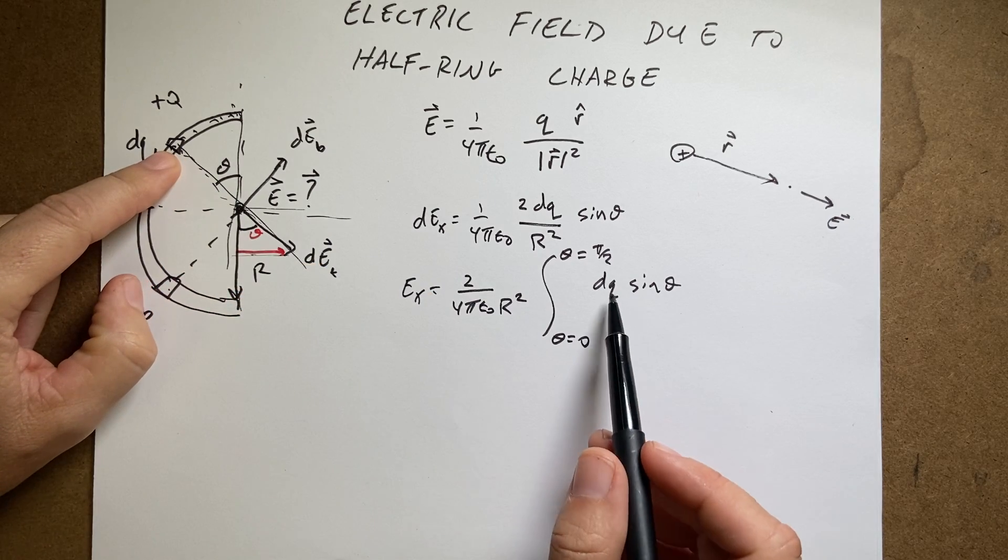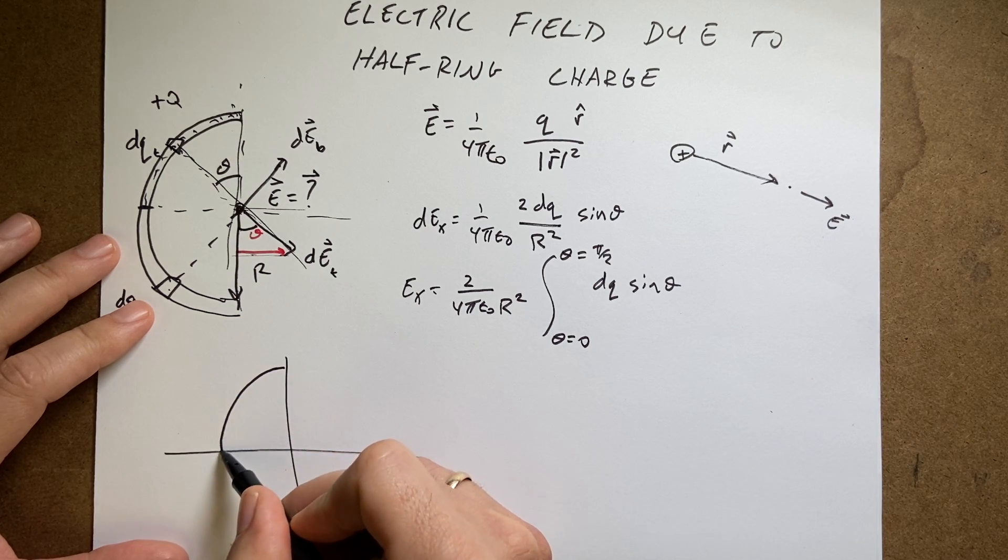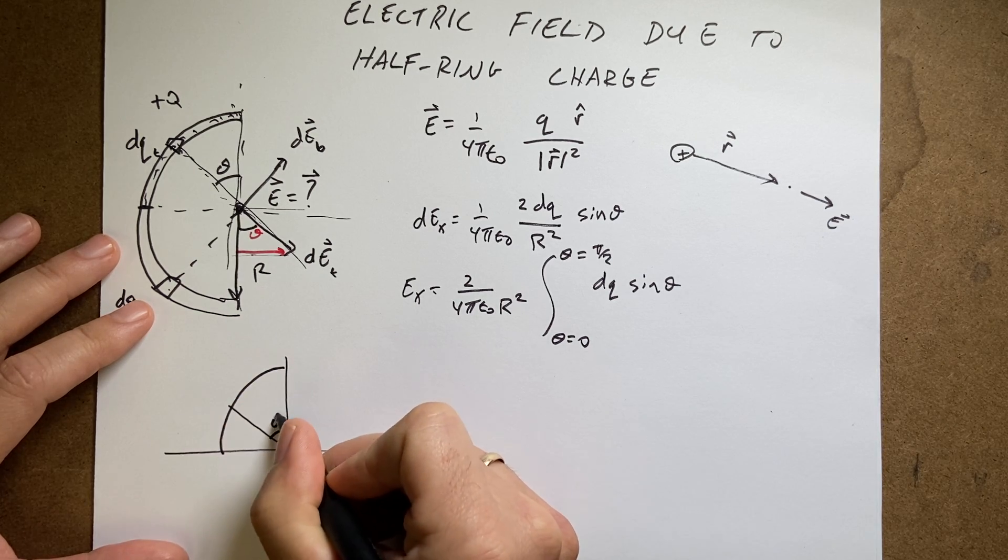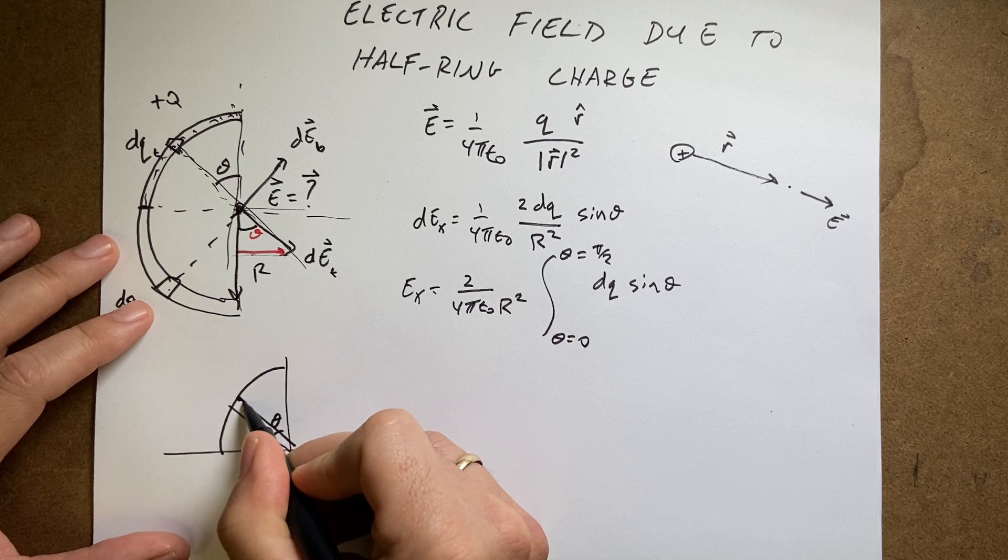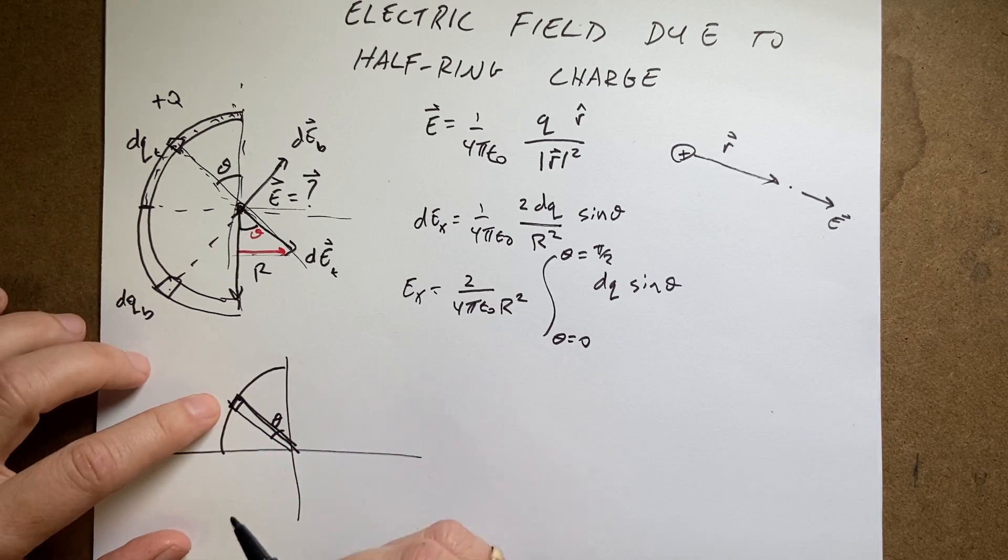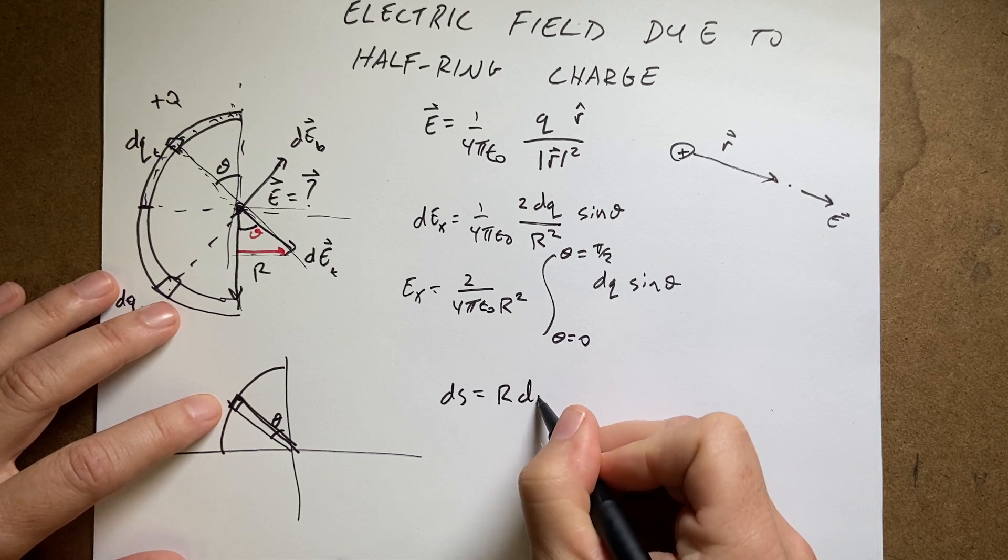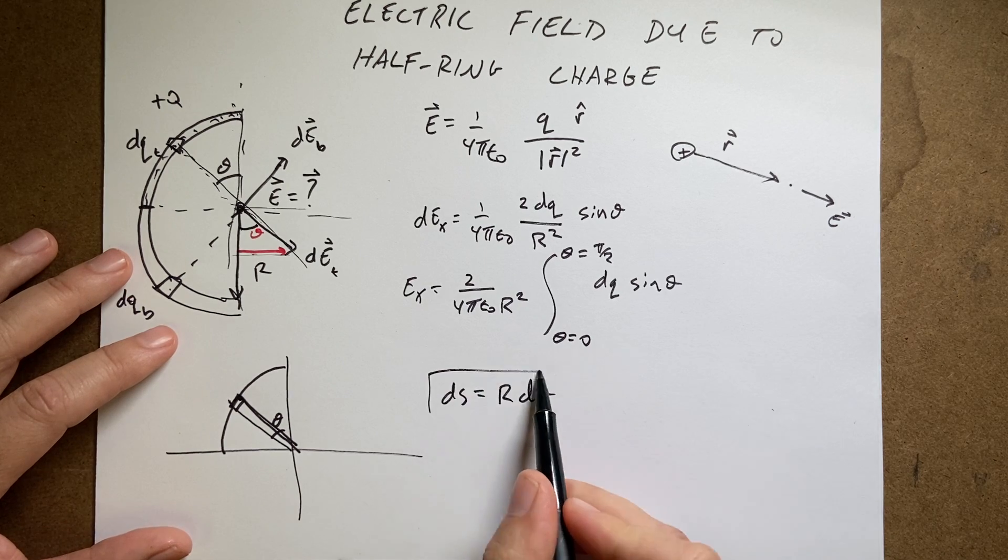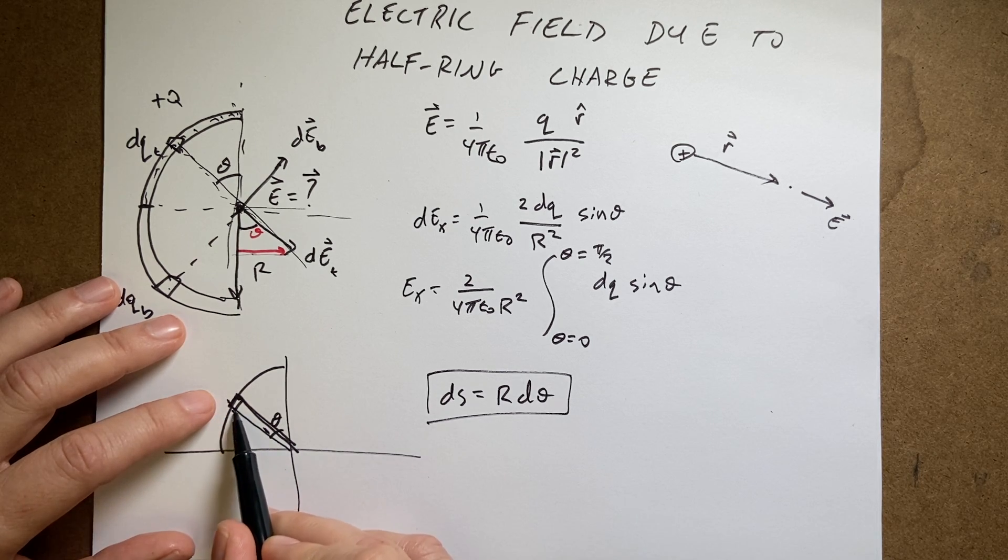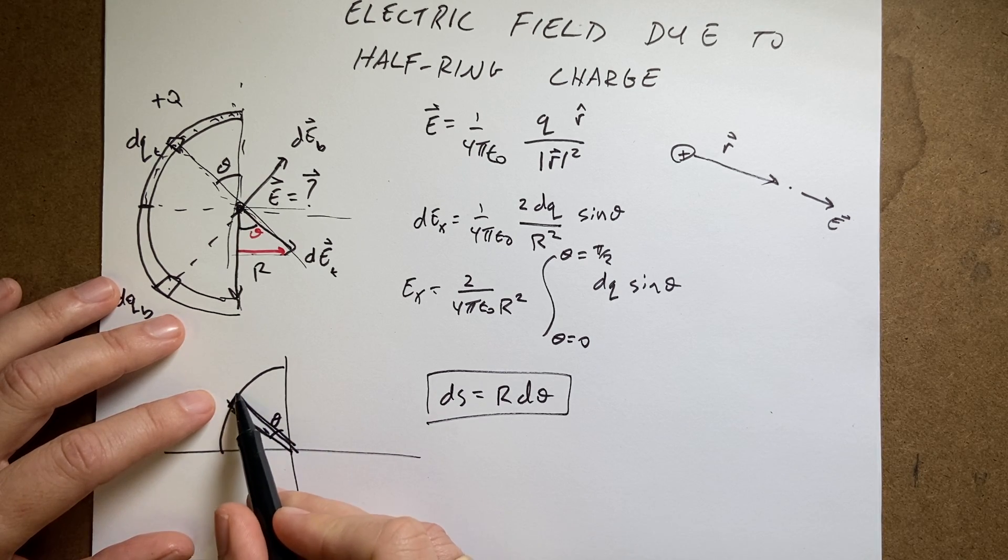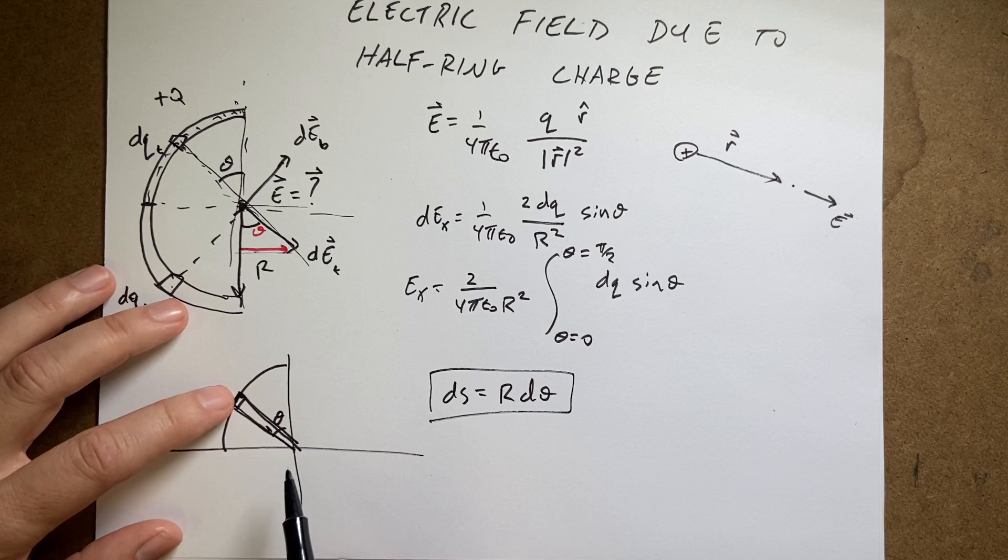Let's get an expression relating dq and theta. So let me redraw my diagram. Say I have a small piece of d theta, so that gives me a little piece of the arc. That will give me a little segment here that has a length of ds equals r d theta. I skipped a little bit here, but if I have a small tiny wedge where this angle inside is d theta, the length of this is r, then the arc length is r d theta. And that's true for any angle.